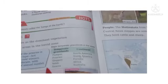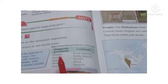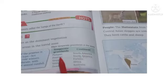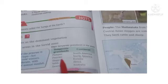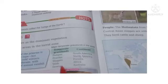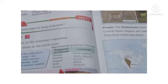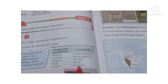Page number 36: Temperate Grasslands, Continent. Pampas — South America. Prairies — North America. Steppes — Eurasia. Wells — Africa. Downs — Australia.